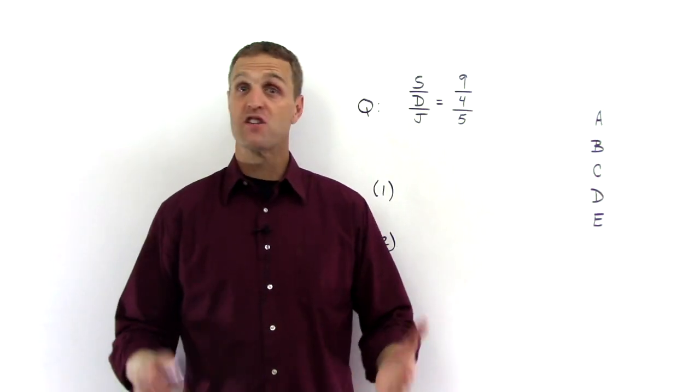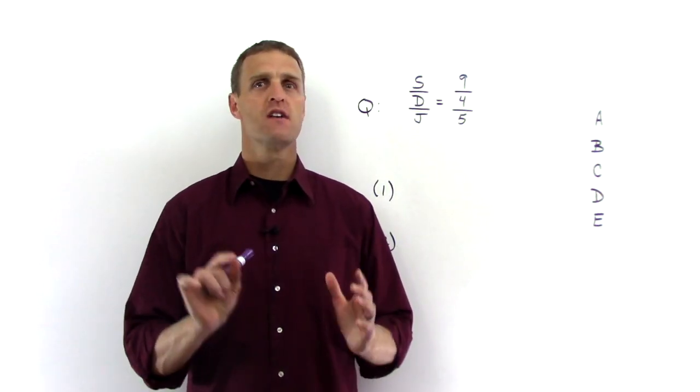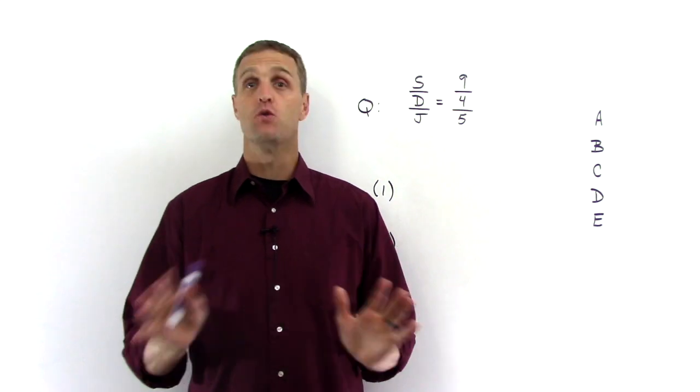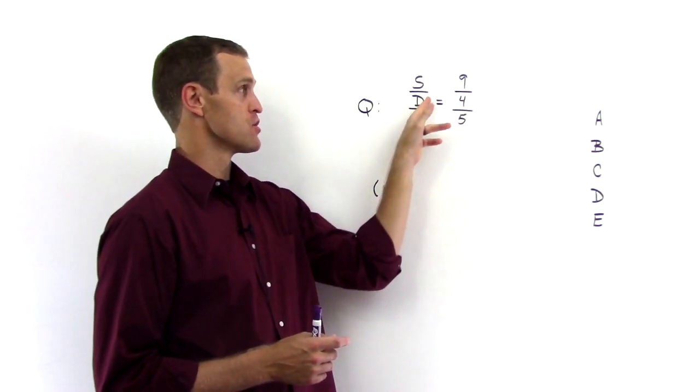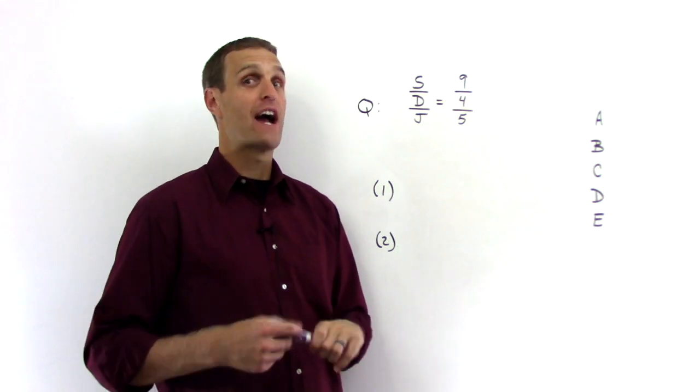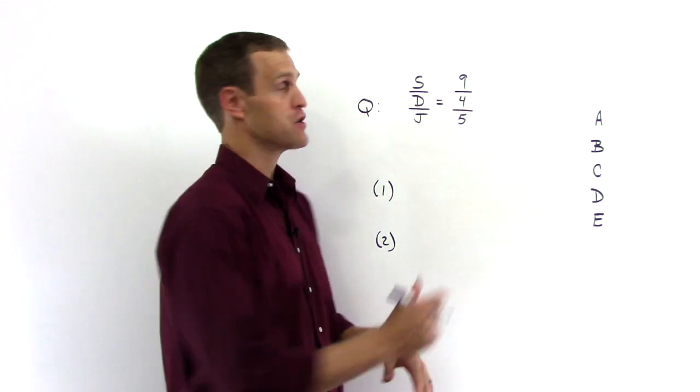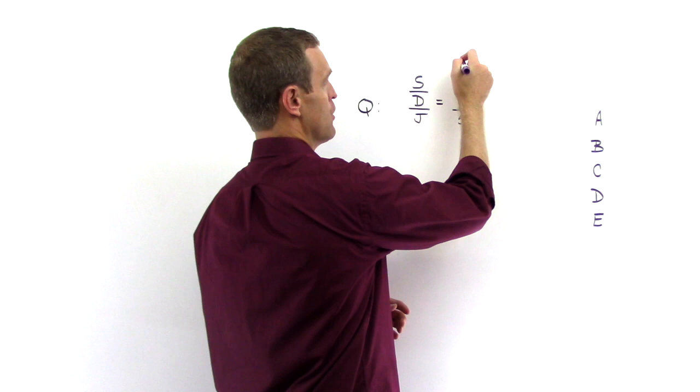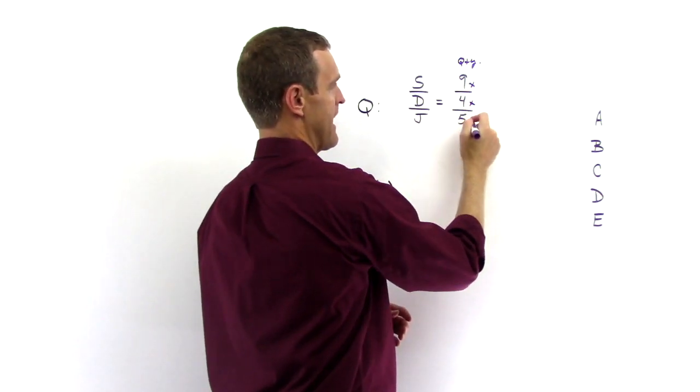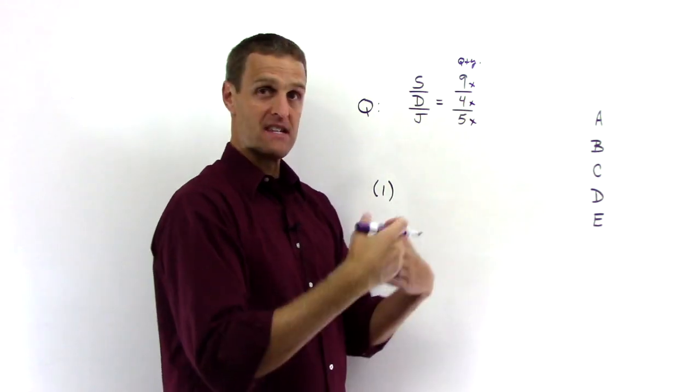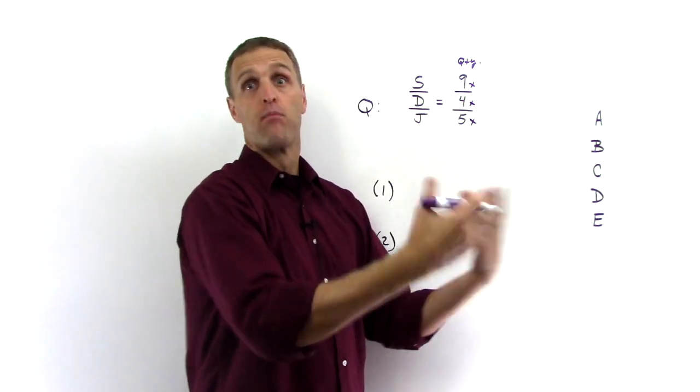Here we have a ratio question. And remember, what's the key to ratios? That relationships do not equal quantities. So they've given us the relationship between shirts, dresses, and jackets. What are the actual quantities? Because we're asked for the total number to convert ratios to quantities, we can just essentially multiply it by X. These ratios can be scaled up proportionally.